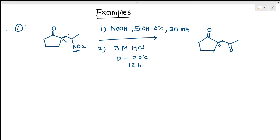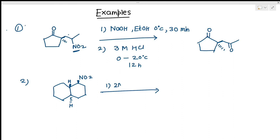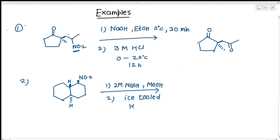The stereochemistry remains unchanged, giving us the product. In the next example, the compound is treated with 2M NaOH in ethanol, then treated with ice-cooled KMnO4. As a result, the nitro group is converted to a COOH group and all other things remain unchanged, giving us this product.